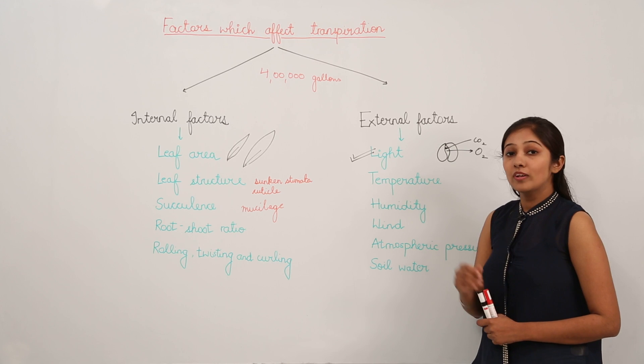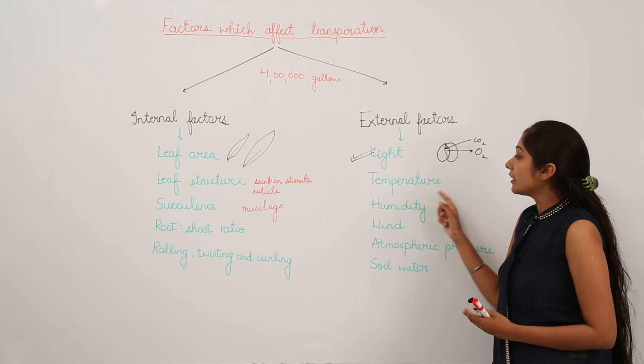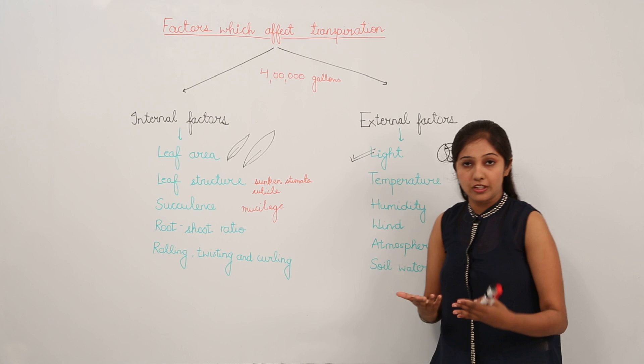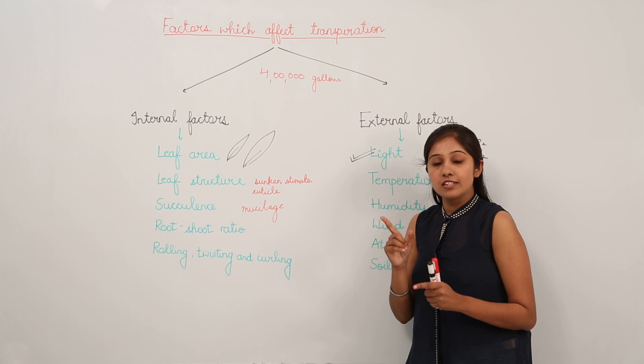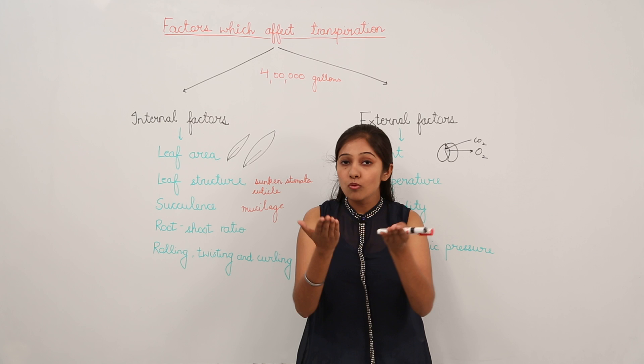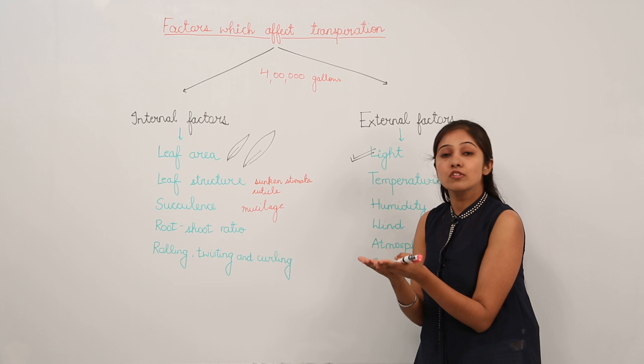Now let's move on to another factor: temperature. Temperature also has a direct influence on the rate of transpiration. We can consider this factor in two ways. First, as temperature rises, there will be more evaporation of water from the surface of leaves, and if there is more evaporation, more will be the rate of transpiration.